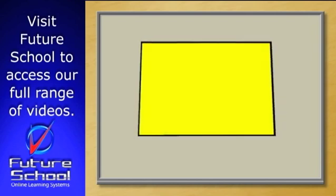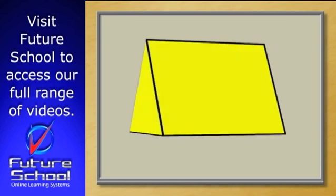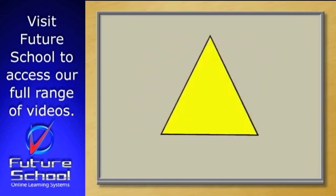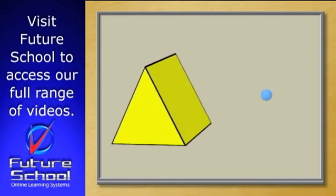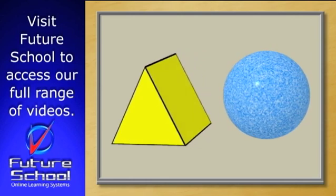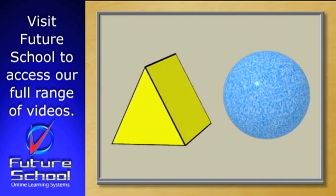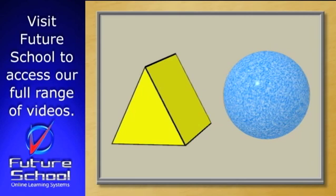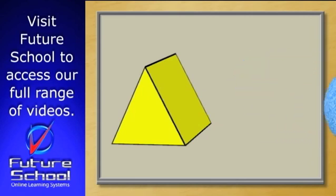All prisms have one or more rectangular sides, joining up the two-dimensional end shapes. So a sphere, which is the shape of a ball, isn't classed as a prism, because it contains no rectangular sides.